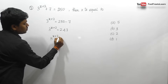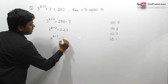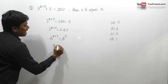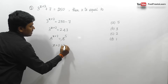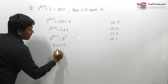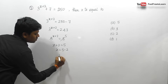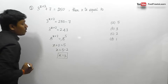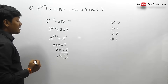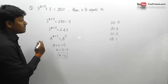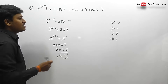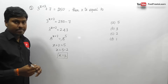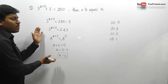Since 243 equals 3 to the power 5, we have 3^(x+2) equals 3^5. Cancelling the bases gives x plus 2 equals 5, so x equals 3. The answer for question number 2 is 3, which is option B.